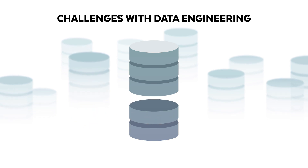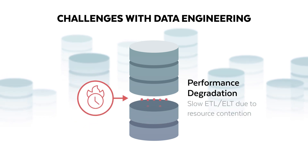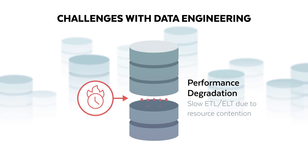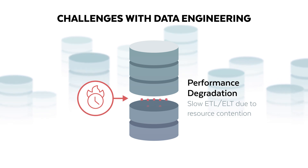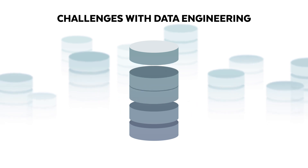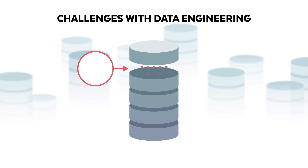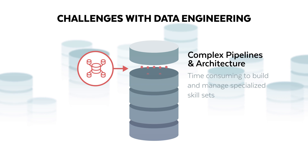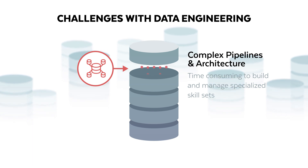Secondly, with resource scarcity comes performance degradation. Data pipeline performance suffers due to the prioritization of analytical workloads. This creates a bottleneck for both data integration and consumption downstream. With complex pipelines and architecture, data engineers spend most of their time configuring and managing infrastructure instead of focusing on delivering data.